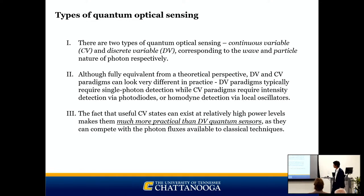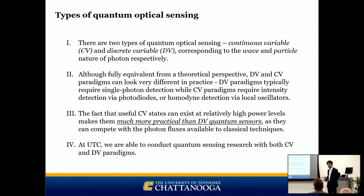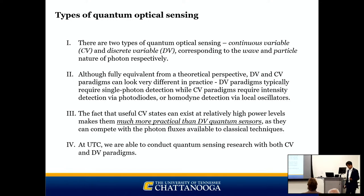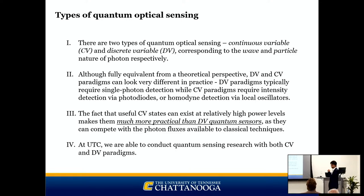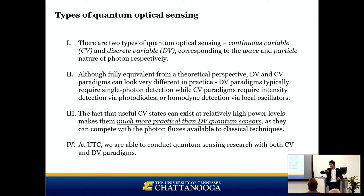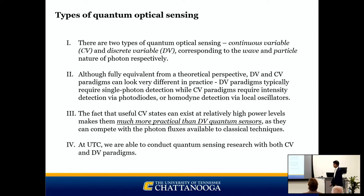At UTC, we are able to conduct quantum sensing with both paradigms — continuous variable and discrete variable. My lab can do CV and DV. The quantum node has been built on UTC's campus, connected to the EPB network, and that lab is designed for the state-of-the-art DV paradigm with SNSPDs and really good detectors.